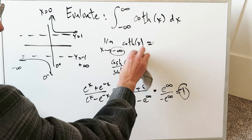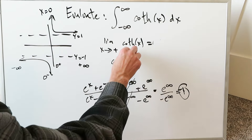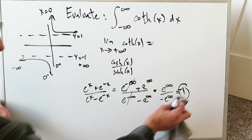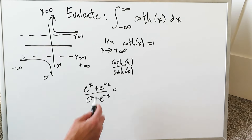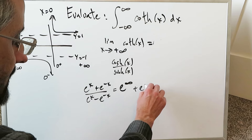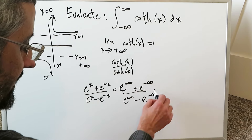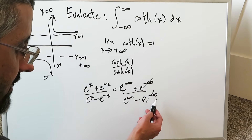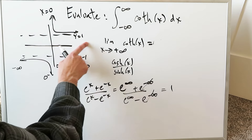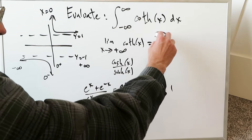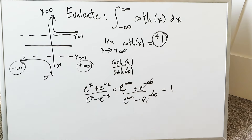The other limit that exists is at positive infinity. As x approaches positive infinity, doing the same procedure with hyperbolic cosine over hyperbolic sine gives (e^∞ + e^{-∞}) / (e^∞ - e^{-∞}). The e^{-∞} terms zero out, leaving e^∞ / e^∞ = 1. So the limit as x approaches infinity is +1, and the function approaches the horizontal asymptote y = +1. Both limits at ±∞ exist.